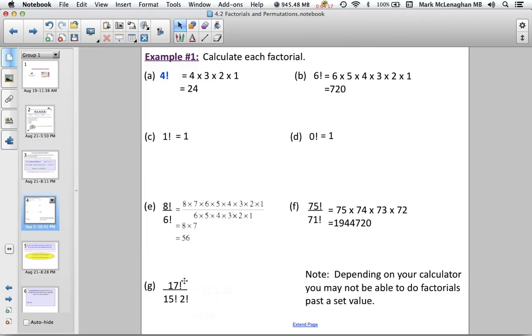Sometimes you also have to divide by a product. So in this case, 17 factorial divided by 15 factorial times 2 factorial. Again, we can do our cancellation. So we'll end up with 17 times 16 divided by 2, which works out to be 136.